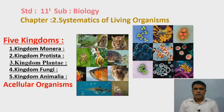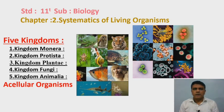Hello students. In our previous session of chapter number 2, that is Systematics of Living Organisms, we have learned regarding the different types of fungi from Kingdom Fungi. In this session, we are going to learn about the 5th Kingdom in the 5 Kingdom System of Classification proposed by the scientist R.H. Whittaker. We are going to learn regarding Kingdom Animalia and about Acellular Organisms.